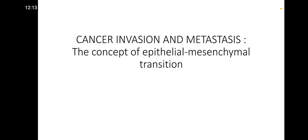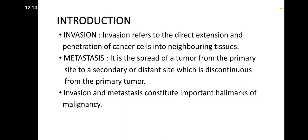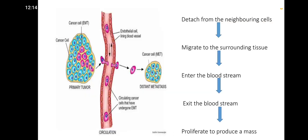Today we are going to discuss the important topic of epithelial mesenchymal transition, which is about cancer invasion and metastasis. Invasion refers to the direct extension and penetration of cancer cells into neighboring tissues. Metastasis is the spread of a tumor from the primary site to a secondary or distant site, discontinuous from the primary tumor. Invasion and metastasis constitute important hallmarks of malignancy.